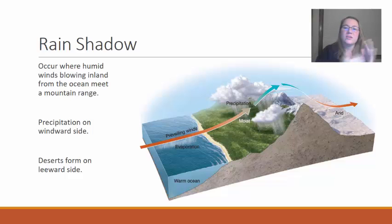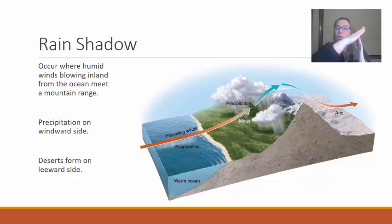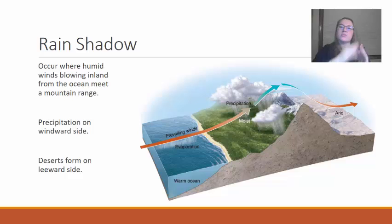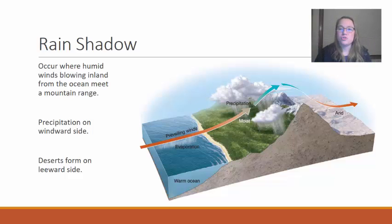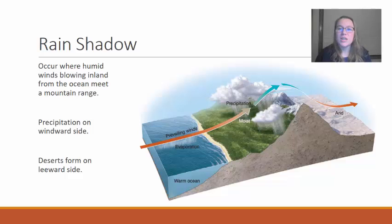As the air comes in and hits the mountain it's forced to go up and over the mountain, and as that air is forced upward it becomes less dense due to adiabatic cooling and it releases its precipitation on that windward side of the mountain.